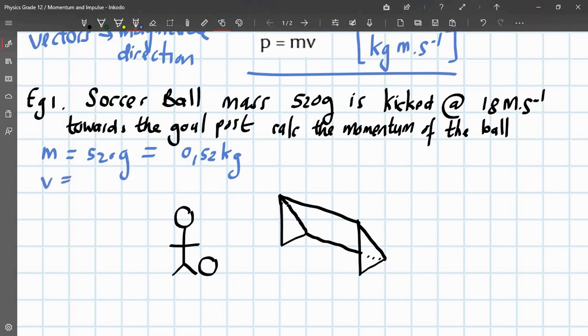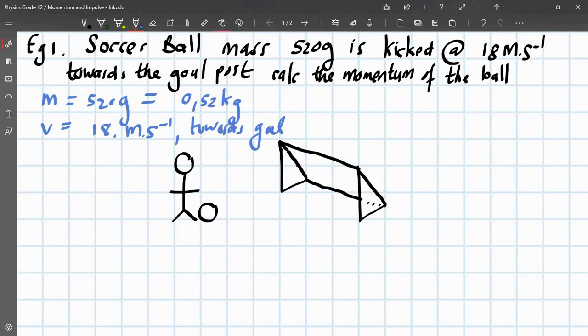The velocity of the ball is given us 18 meters per second. And this is also towards the goal post. So, it's straightforward to work out the momentum. We would say, p is equal to mv. Mass times velocity. Mass is equal to 0.52 kilograms times 18 meters per second. To give you a final answer.